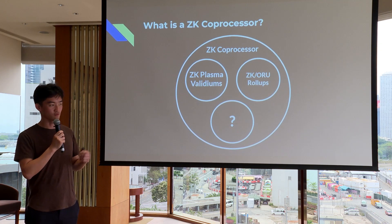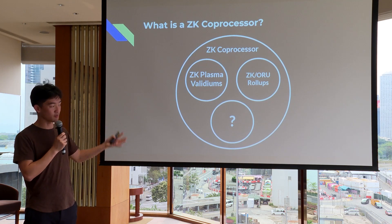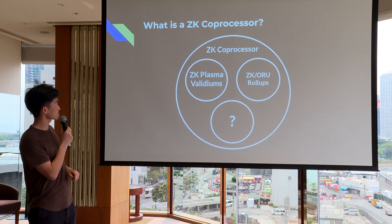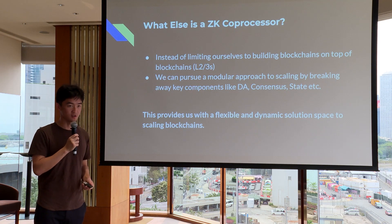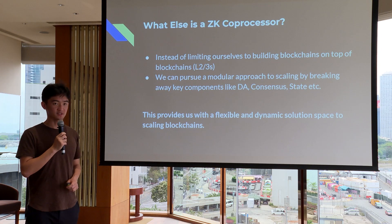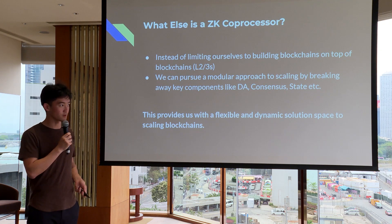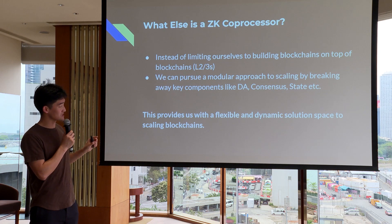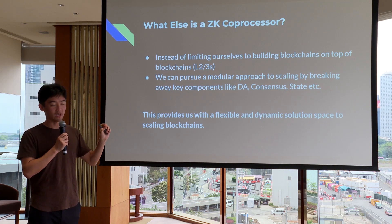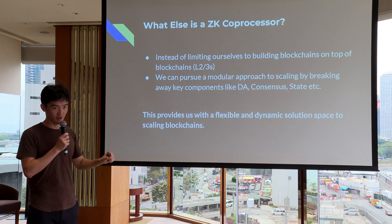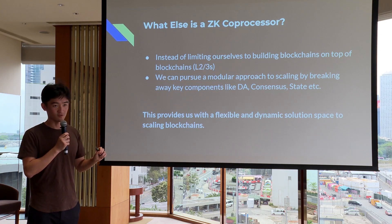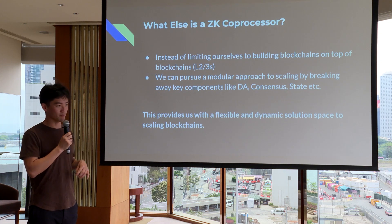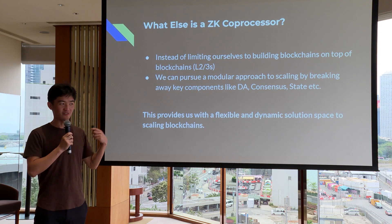We can start thinking about ZK coprocessors as a larger generalization of the rollup and scaling framework — ZK rollups, plasmas, and validiums are all part of this. But there's also something new we can build thanks to advancements in ZK. Instead of limiting ourselves to building blockchains on top of blockchains, like L2s and L3s, we can enshrine ZK and take advantage of verifiable compute for a more modular approach. We can break rollups into even more pieces — not just DA, but also consensus and state — creating a more flexible and dynamic solution space.